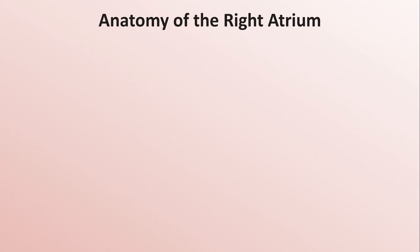In order to understand the pathophysiology of different subtypes of atrial flutter, it's necessary to briefly review atrial anatomy — specifically right atrial anatomy — since the overwhelming majority of atrial flutter originates in the right atrium.